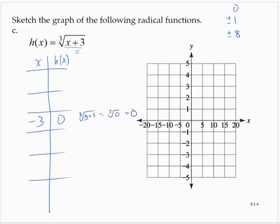What makes the inside 1? Negative 2: the cube root of negative 2 plus 3 is the cube root of 1, which is 1. What makes the inside 8? 5 makes the inside 8, giving an output of 2. What makes the inside negative 1? The input would be negative 4. And what makes the inside negative 8? That would be negative 11. Negative 11 plus 3 is negative 8, and the cube root of negative 8 is negative 2.